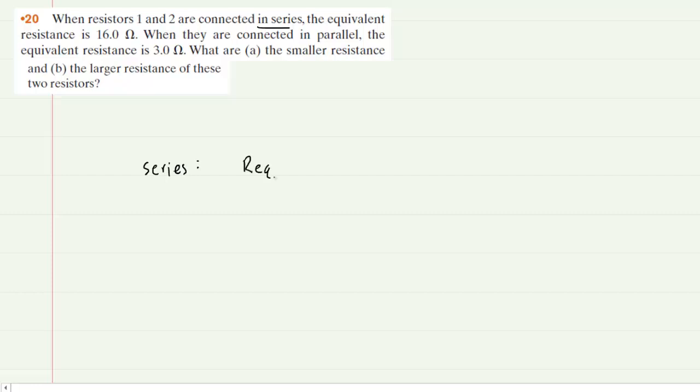The equivalent resistance is equal to the resistance value of resistor 1 plus the resistance value of resistor 2. Now we are told that the equivalent resistance in the series arrangement is 16 ohms, so we can actually set R1 plus R2 equal to 16 ohms.